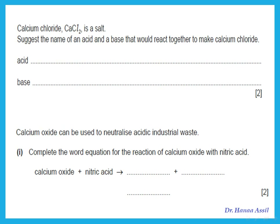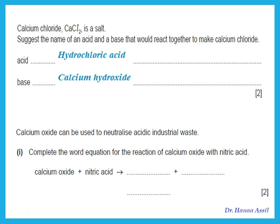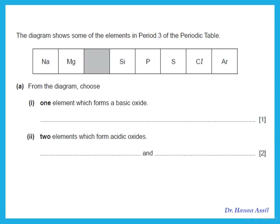To make calcium chloride, name an acid and a base that would react together. Calcium chloride is a salt, so I need the acid containing chlorine — hydrochloric acid — and a calcium base — calcium hydroxide. For calcium oxide plus nitric acid: calcium oxide is a base, and acid plus base gives salt plus water. The salt here is calcium nitrate.